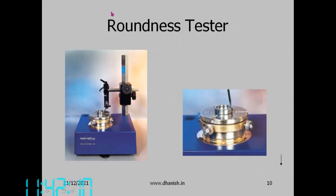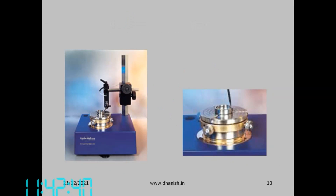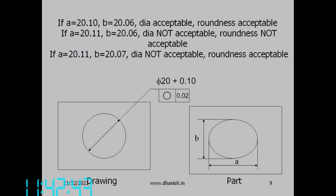How do we measure roundness? The most accurate instrument is the roundness tester. We have a digital roundness tester which you will be able to see when you come to campus. The roundness tester has a console, software, and a table — usually on air bearings — that rotates with an accuracy of 0.005 microns.